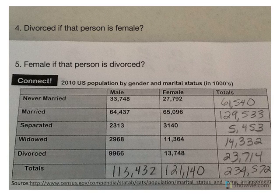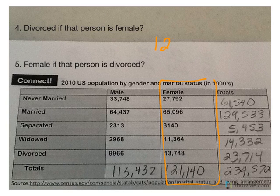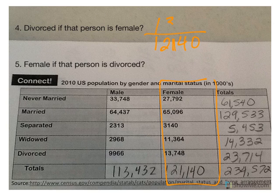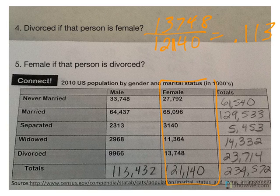I like four and five — they're the same wording but different order. In number four, find the probability that somebody is divorced if they are female. So we're starting with females — total females on the bottom is 121,140, and we want to know if that person is female, what's the probability they are divorced? We've got 13,748 on the top for a decimal answer of .113. So 11.3% of all females are divorced.